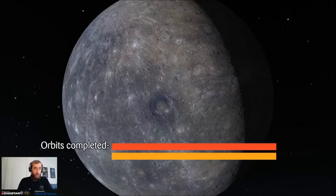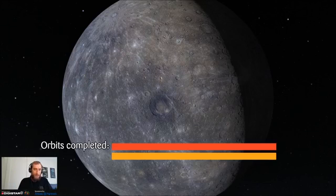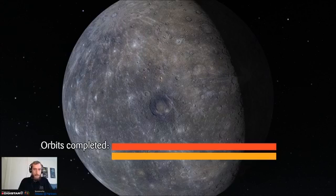So if you lived on Mercury, for you to see one full solar day, a sunrise, a sunset, and for the Sun to get ready to rise again, that would take you two Mercury years, which I think is also pretty surprising.